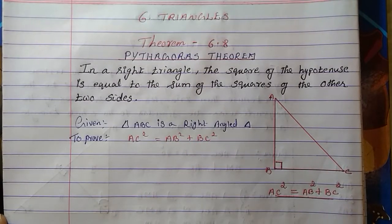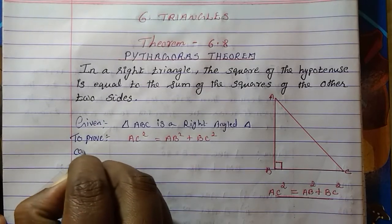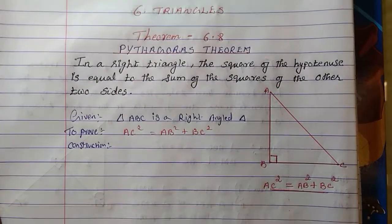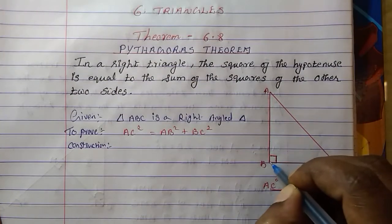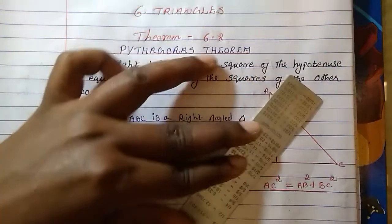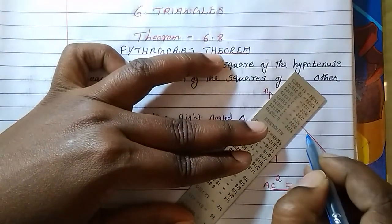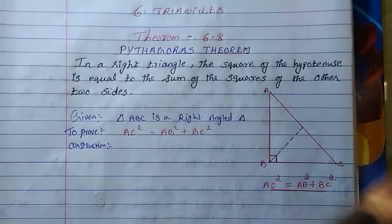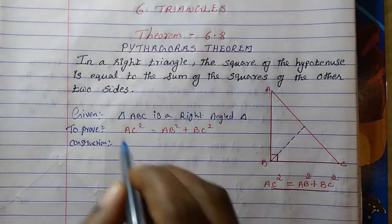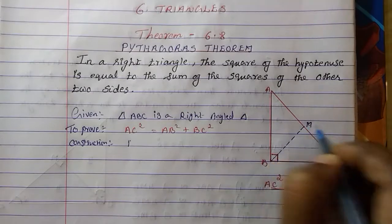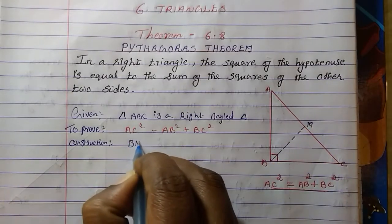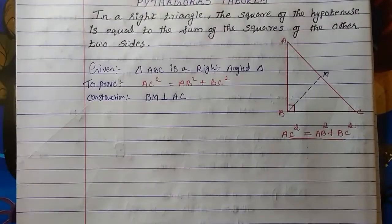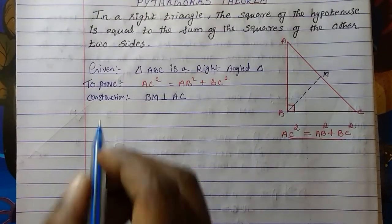Then we have to do some construction so that we can refer to Theorem 6.7. The construction is: we have to draw a perpendicular from the right angle vertex to the hypotenuse. Here I have drawn the perpendicular, and we name that point M. So BM is perpendicular to AC.